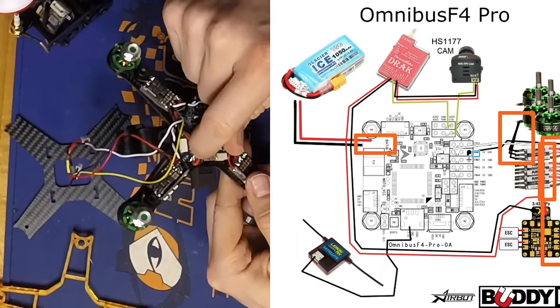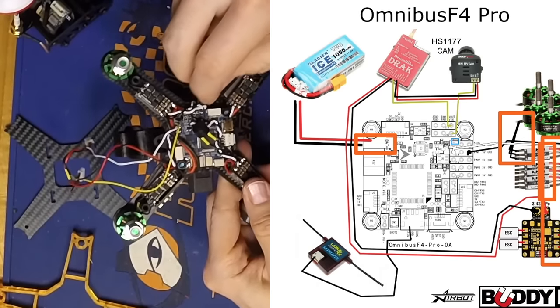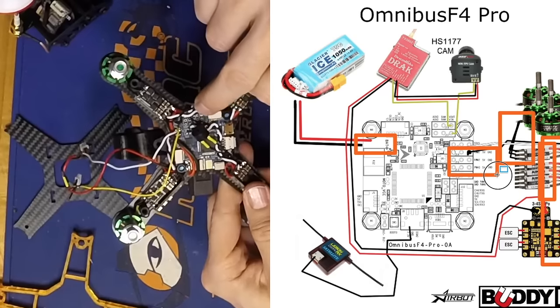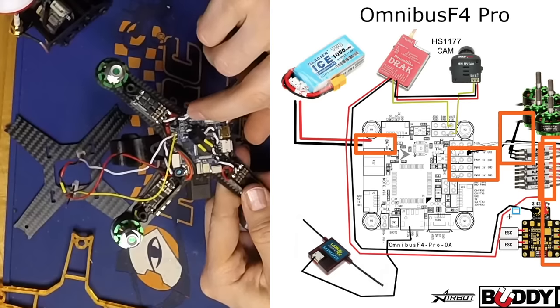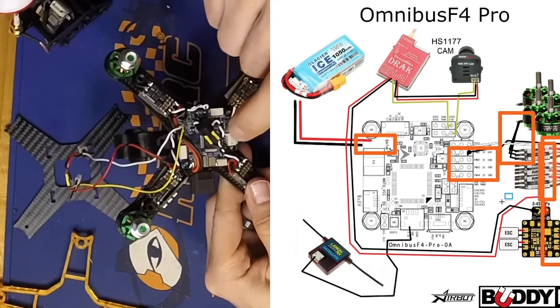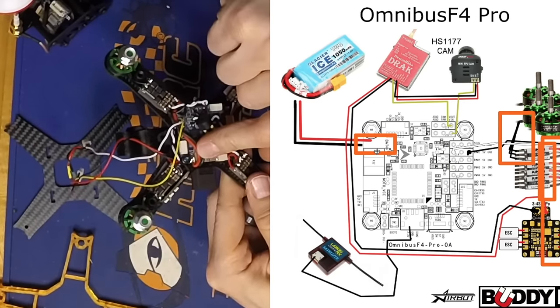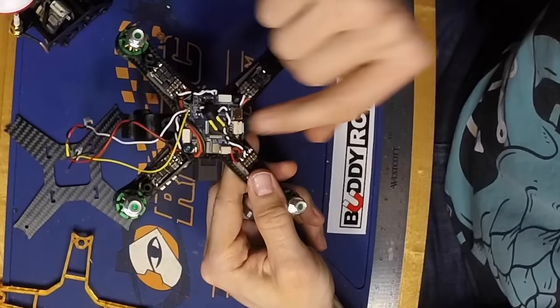It's important to use those main pads to power the board. You can also power it off of the positive 5 volt terminal on the ESC ports, but if you want to take advantage of the current sensor, you need to have it connected to the battery terminal on the board.